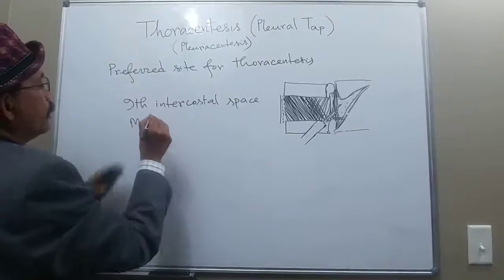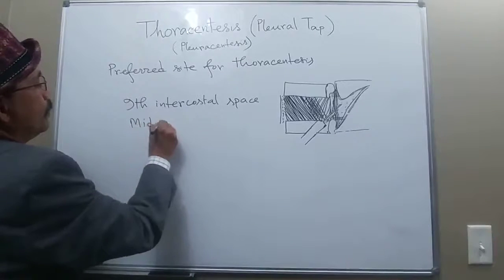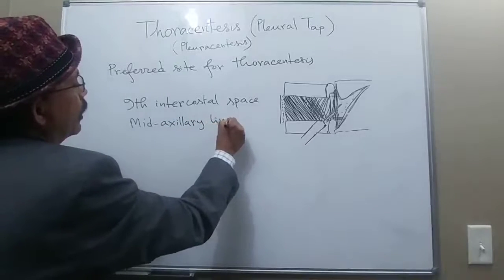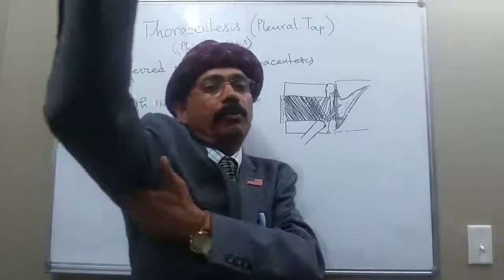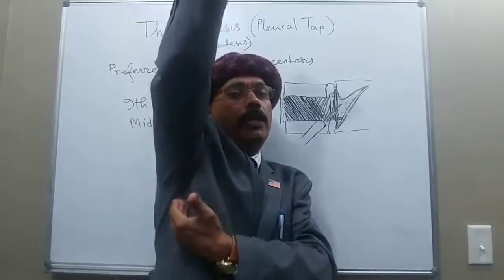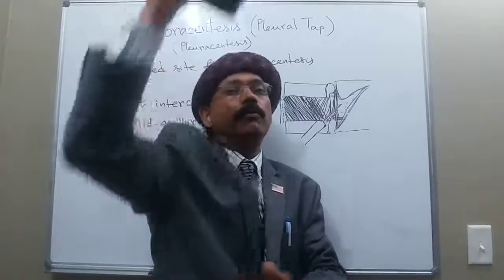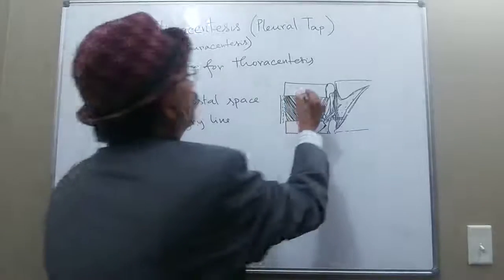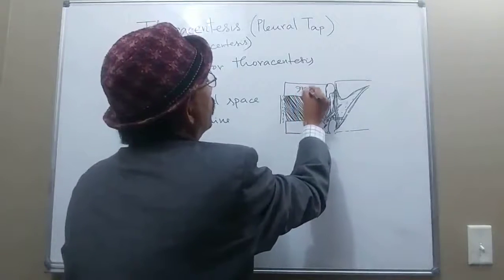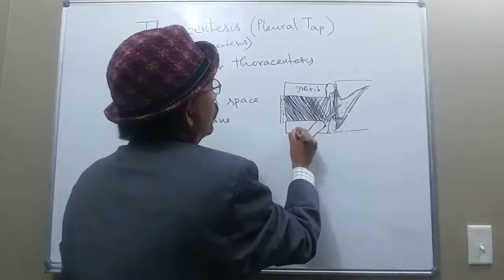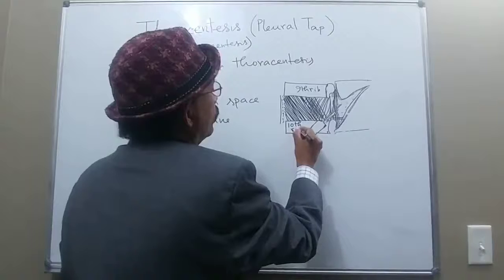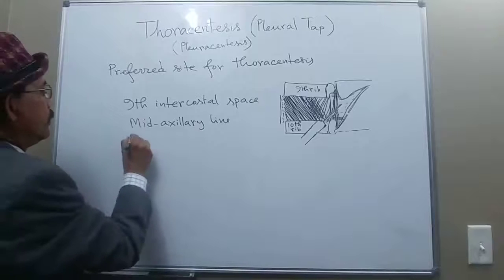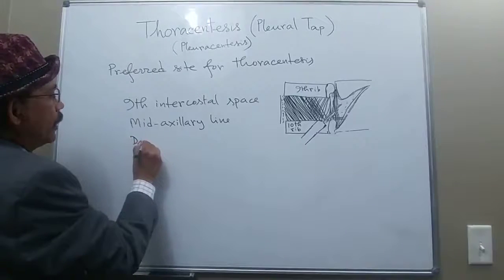The preferred site is the mid-axillary line, which is a vertical line drawn midway between the anterior axillary fold and the posterior axillary fold. So the site is the ninth intercostal space — between the ninth and tenth rib — at the mid-axillary line.